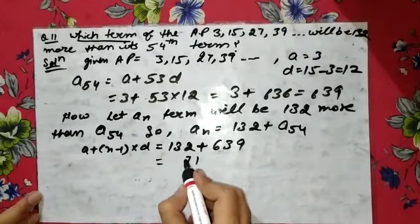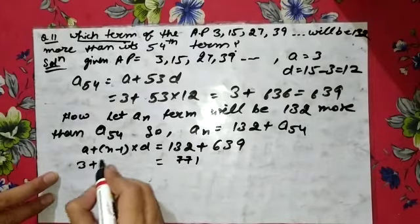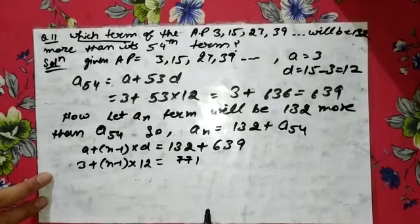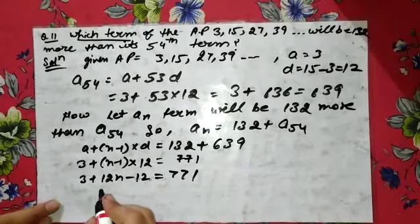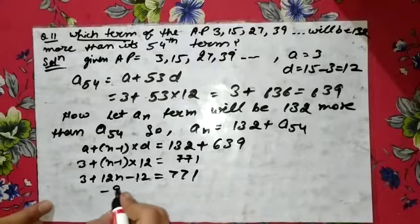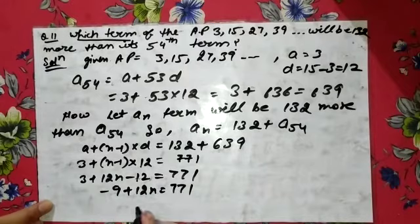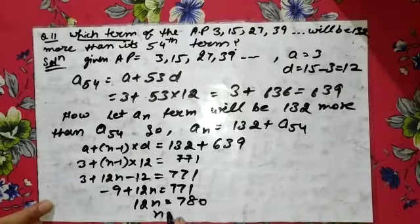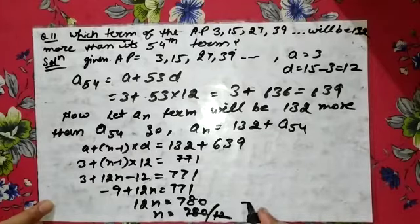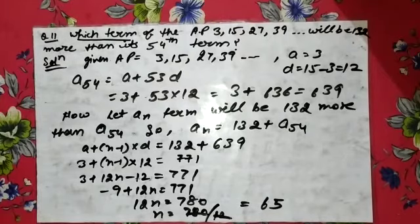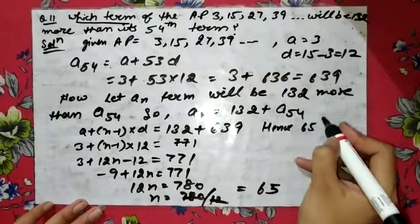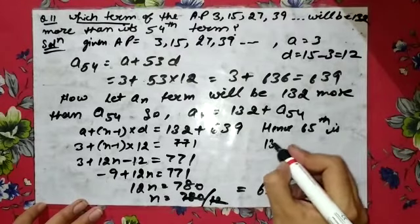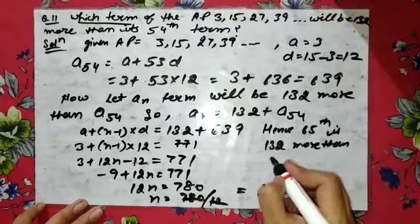So 771 = 3 + 12n minus 12, giving us 771 = minus 9 + 12n, therefore 12n = 780 and n = 780/12 = 65. Hence the 65th term is 132 more than the 54th term.